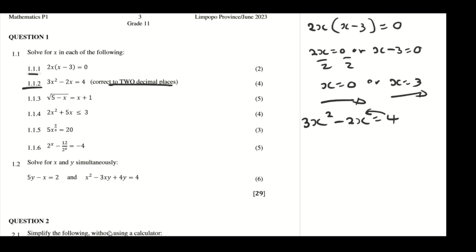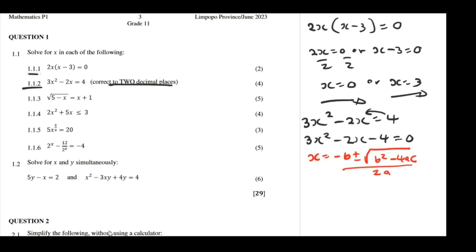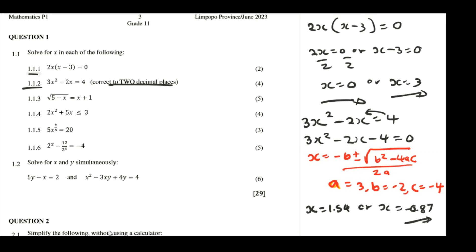So let's first write it in standard form. We transpose the 4, giving us 3x squared minus 2x minus 4 equals 0. Then we use the quadratic formula: x equals negative b plus or minus the square root of b squared minus 4ac, divided by 2a. Here a equals 3, b equals negative 2, and c equals negative 4. The solutions are x equals 1.54 or x equals negative 0.87.